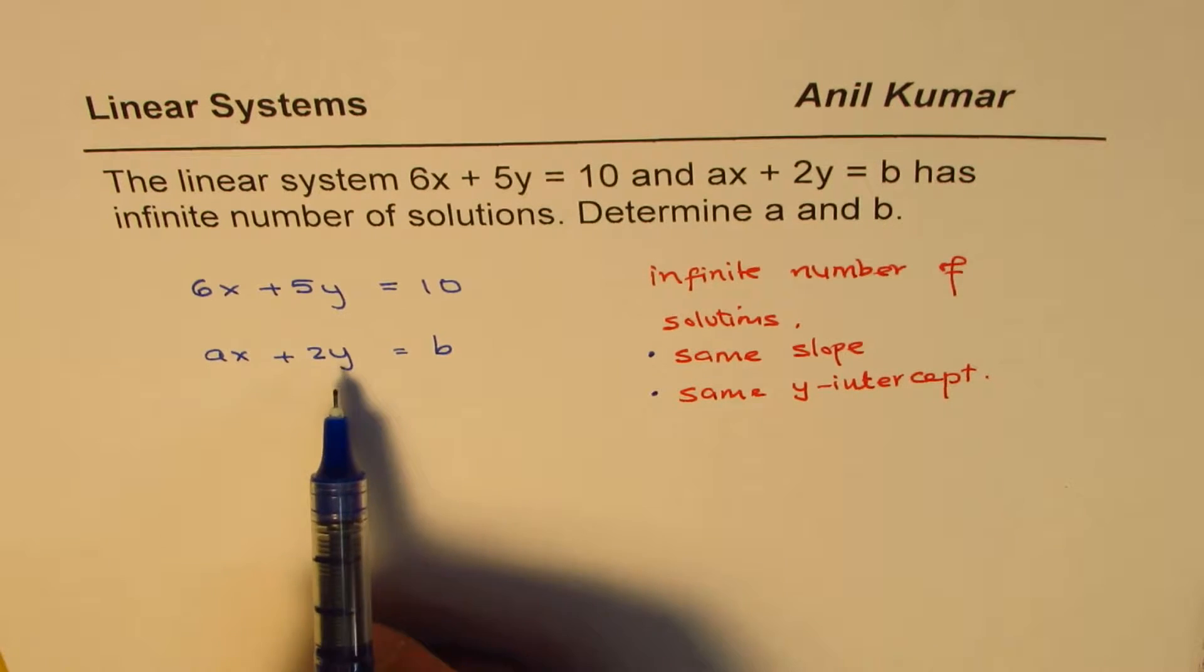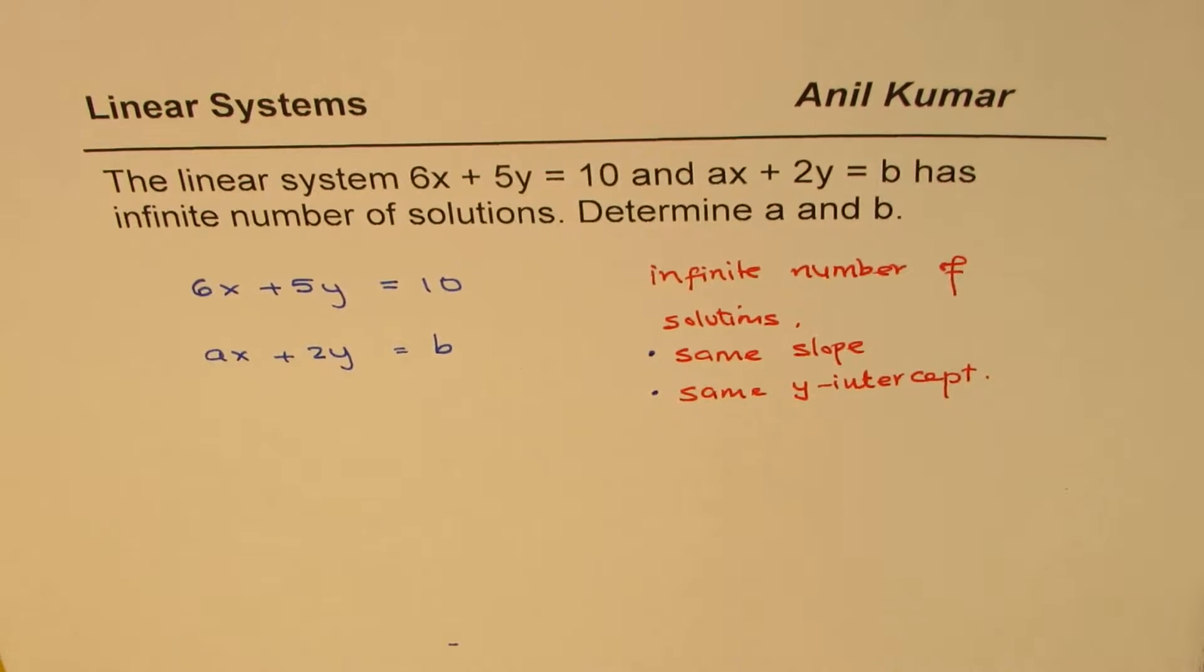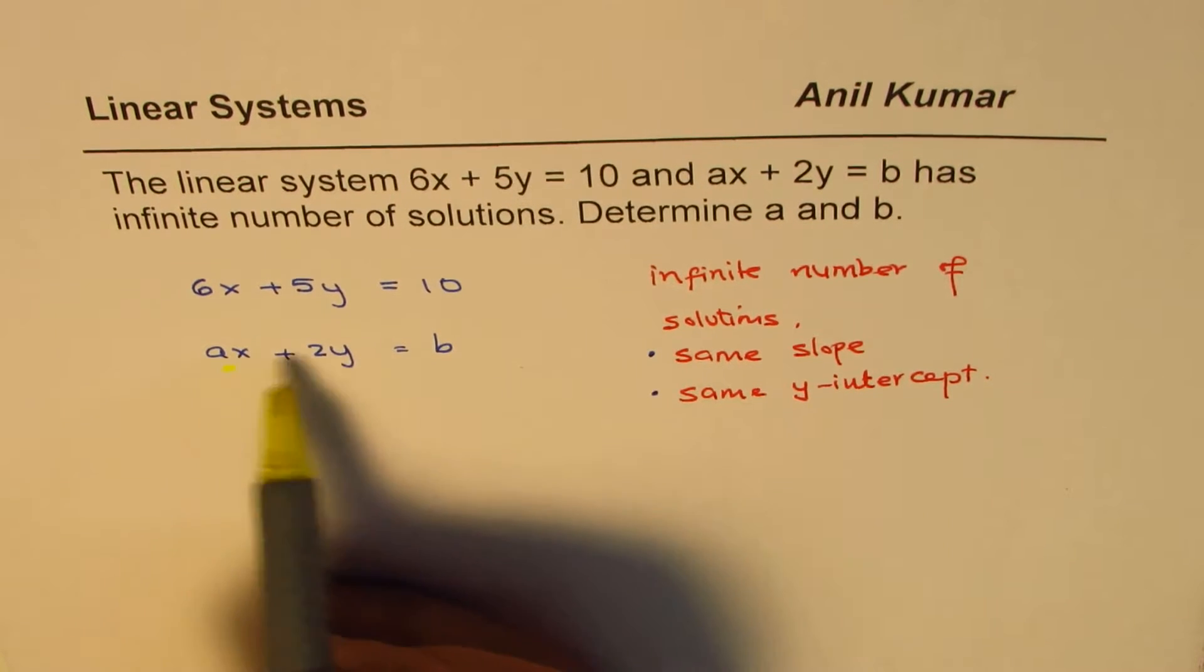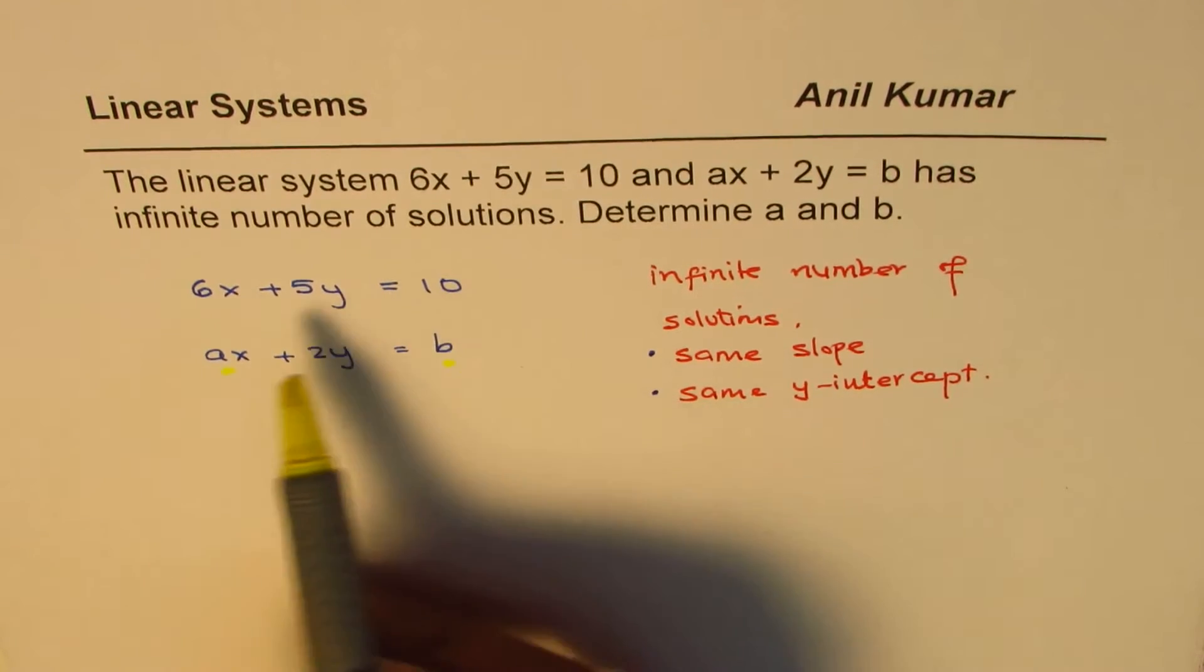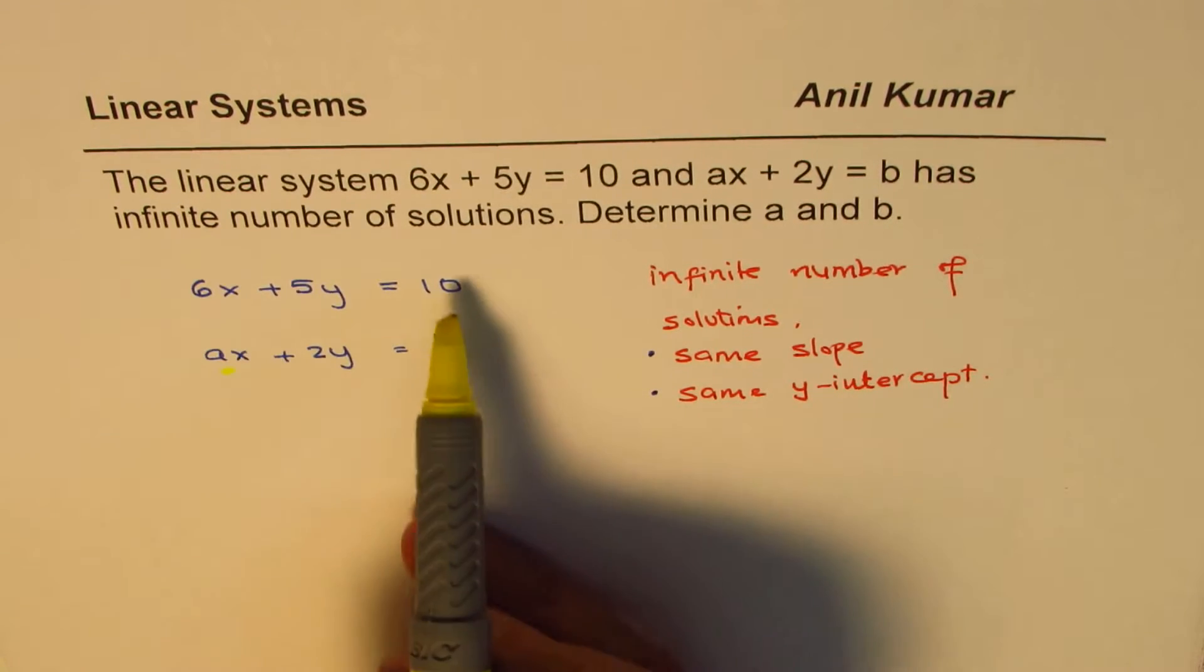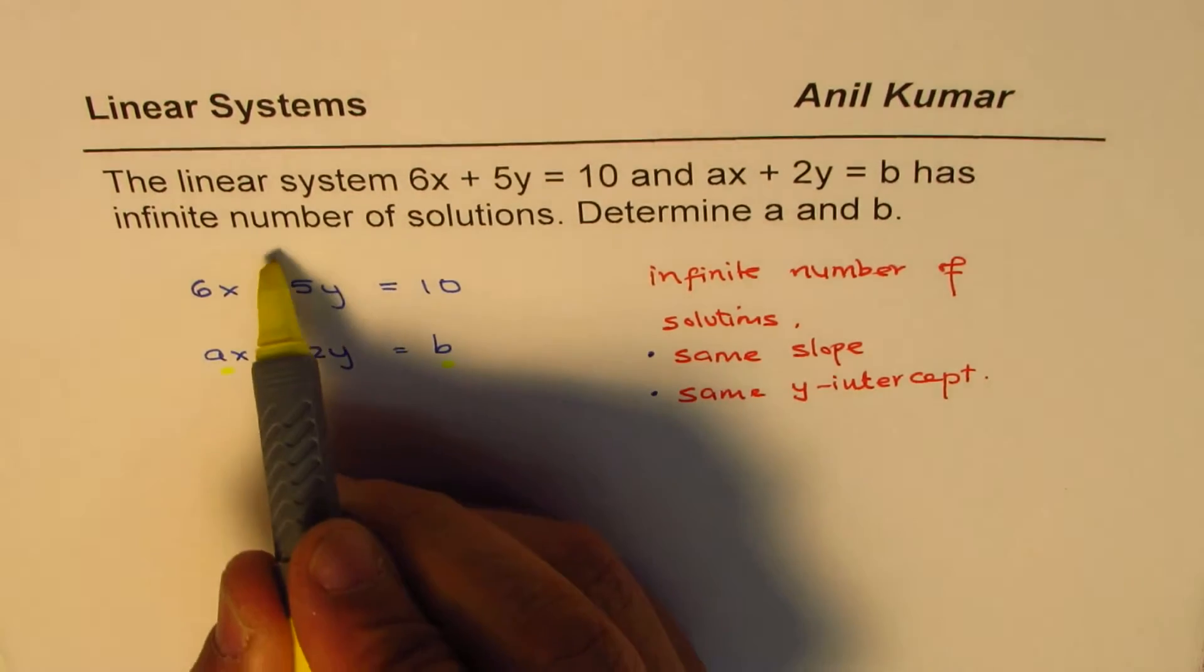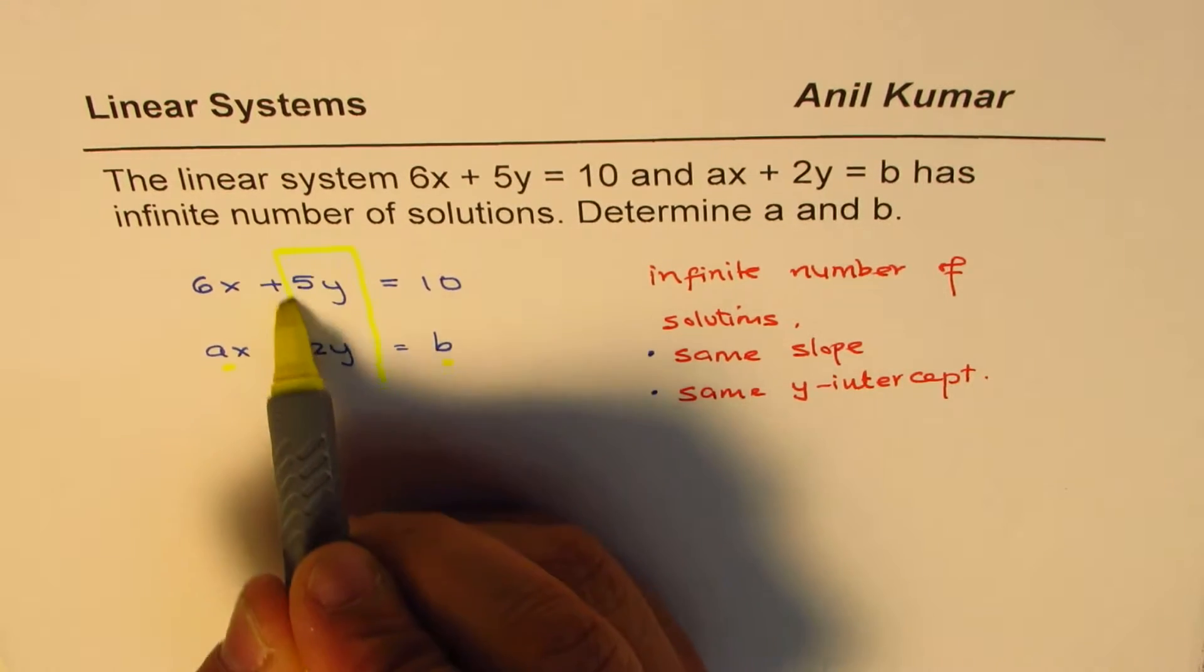So I'll adopt method number two in this particular case. Now what you observe here is that we have to find a and b, so directly we cannot compare x and the constant values, but we can compare the y values.